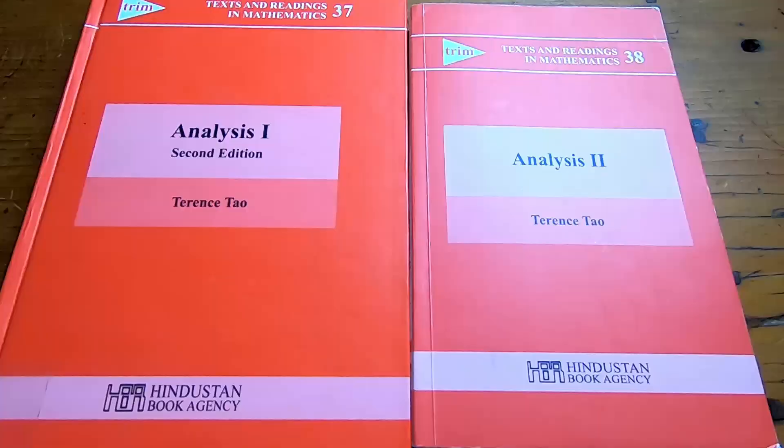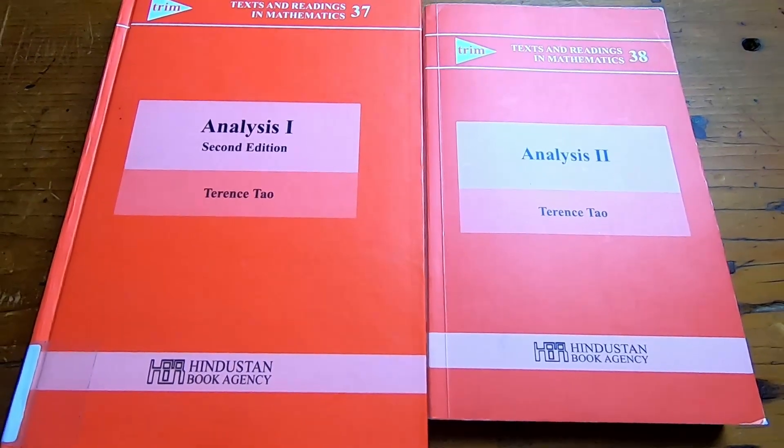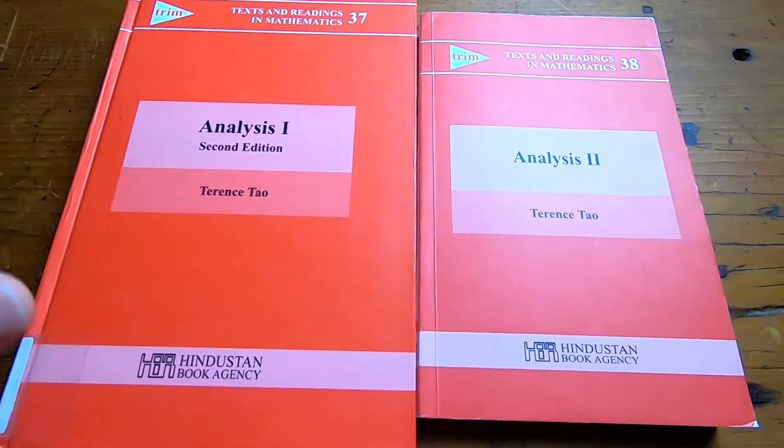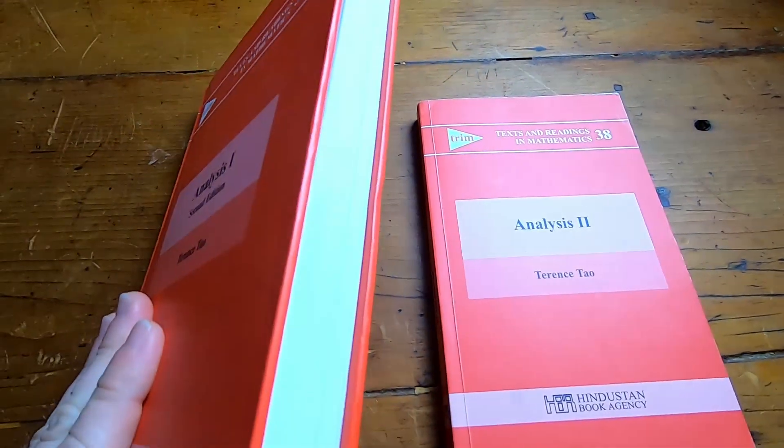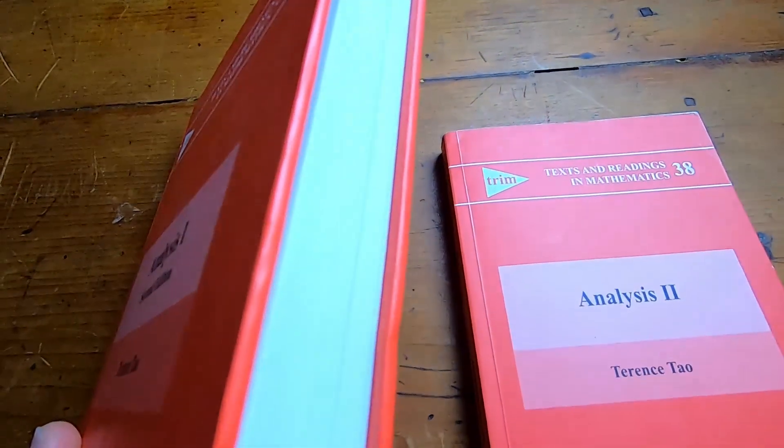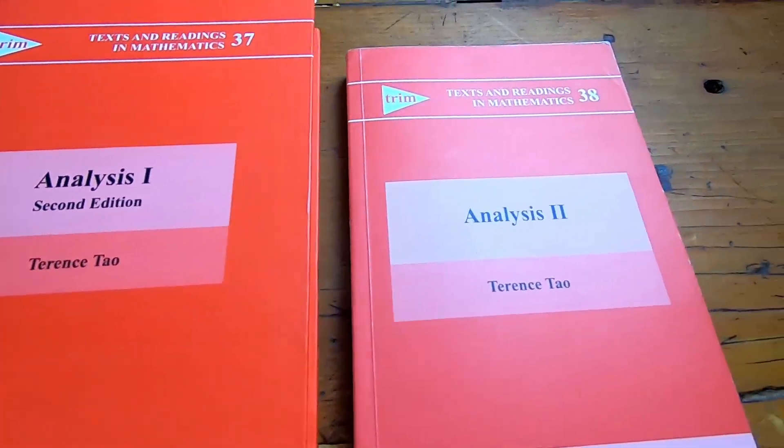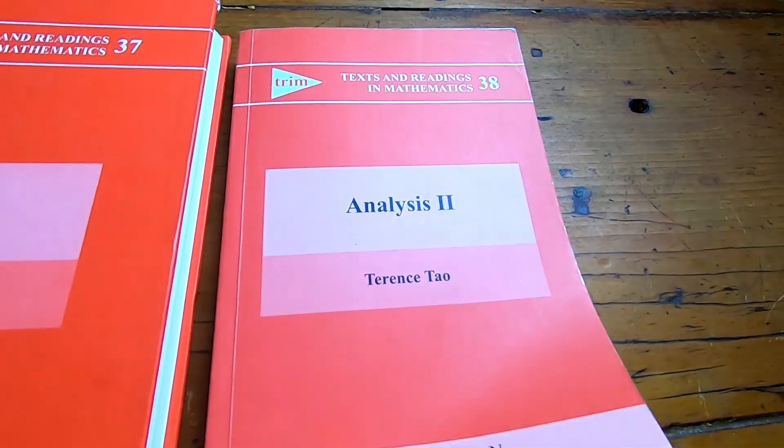It's just so much material that I guess Tao decided to break it up into two textbooks. And they're pretty decent sized books. They're not really thin, they're about a regular size as you can see. This one's a hardcover, and then this one is a softcover.